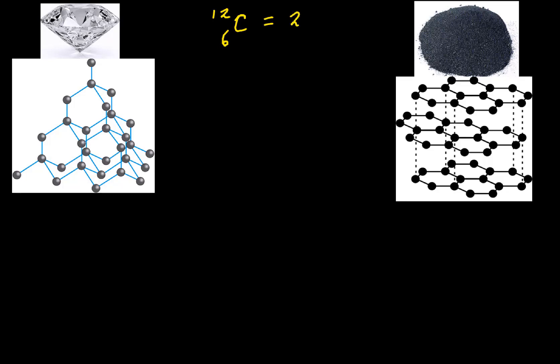Carbon (6, 12) has the electronic configuration 2, 4 — two electrons in the first shell and four electrons in the second shell. To complete its outermost shell, carbon needs four more electrons, since the second shell must have eight electrons. Therefore, each carbon can form four covalent bonds with other carbon atoms.